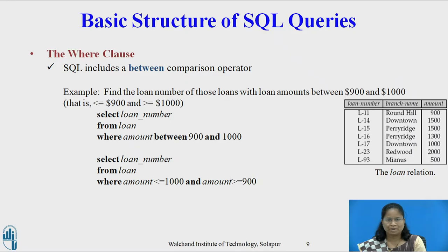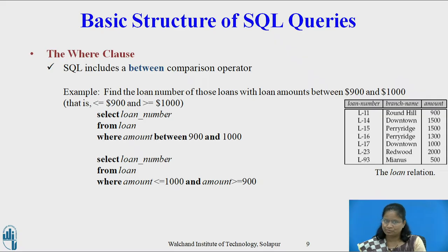SQL includes a BETWEEN comparison operator to simplify WHERE clauses that specify a value be less than or equal to some value and greater than or equal to some other value. Example: find the loan number of those loans with loan amount between $900 and $1000. Using the BETWEEN operator: SELECT LOAN_NUMBER FROM LOAN WHERE AMOUNT BETWEEN 900 AND 1000. Instead of using comparison operators: SELECT LOAN_NUMBER FROM LOAN WHERE AMOUNT <= 1000 AND AMOUNT >= 900. Similarly, we can use the NOT BETWEEN comparison operator.